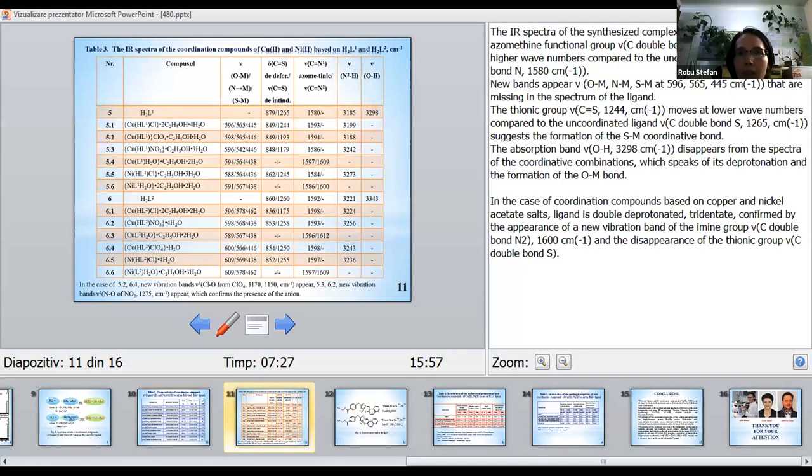The IR spectra of synthesized complexes suggests that the azomethine functional group ν(C=N) 1594 cm⁻¹ moves at higher wave numbers compared to uncoordinated ligand, 1580 cm⁻¹. New bands appear ν(M-N), ν(M-O), ν(M-S) at 596, 565, 445 cm⁻¹ that are missing in the spectrum of the ligand.